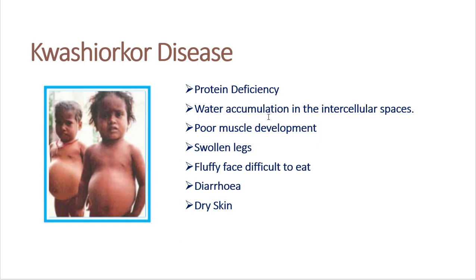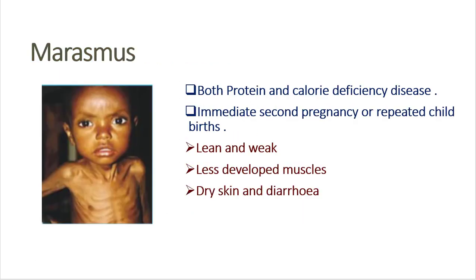What do we have to do here? Children suffering with Kwashiorkor disease should be given protein-rich food, and then the children will cure and get out of that disease. The second one is Marasmus. Marasmus is caused due to both protein and calorie deficiency. This situation occurs when the mother gets an immediate second pregnancy — she cannot give breast milk to the first child, so that child gets this disease.